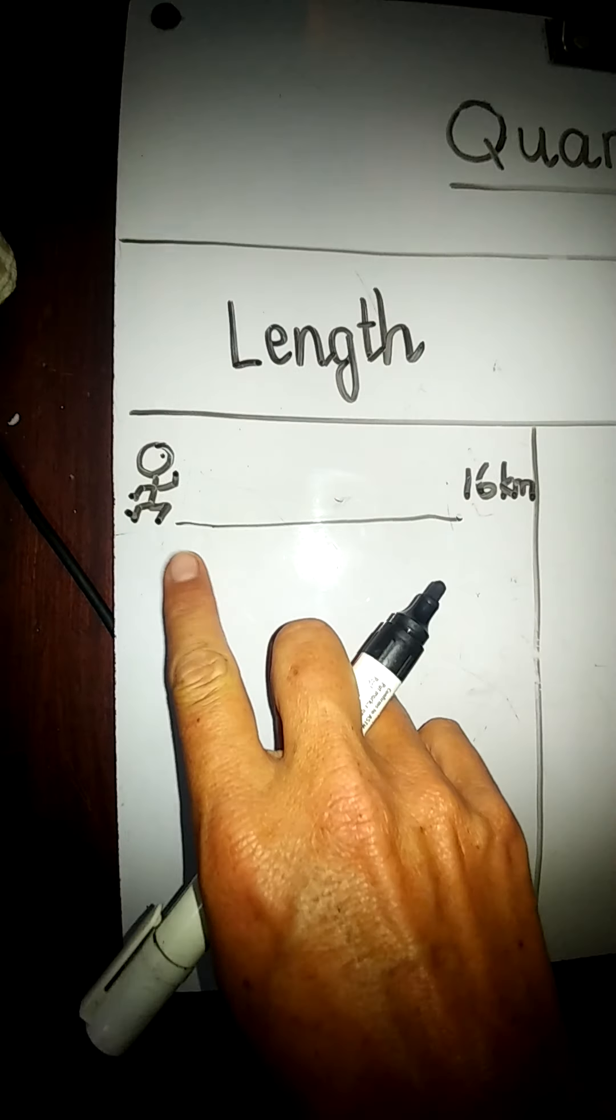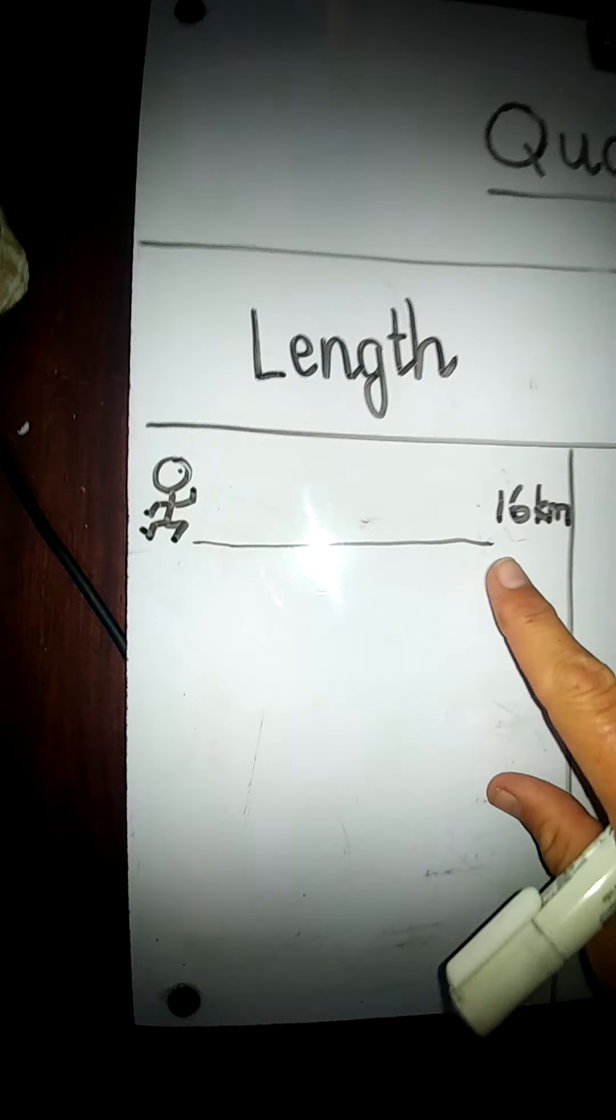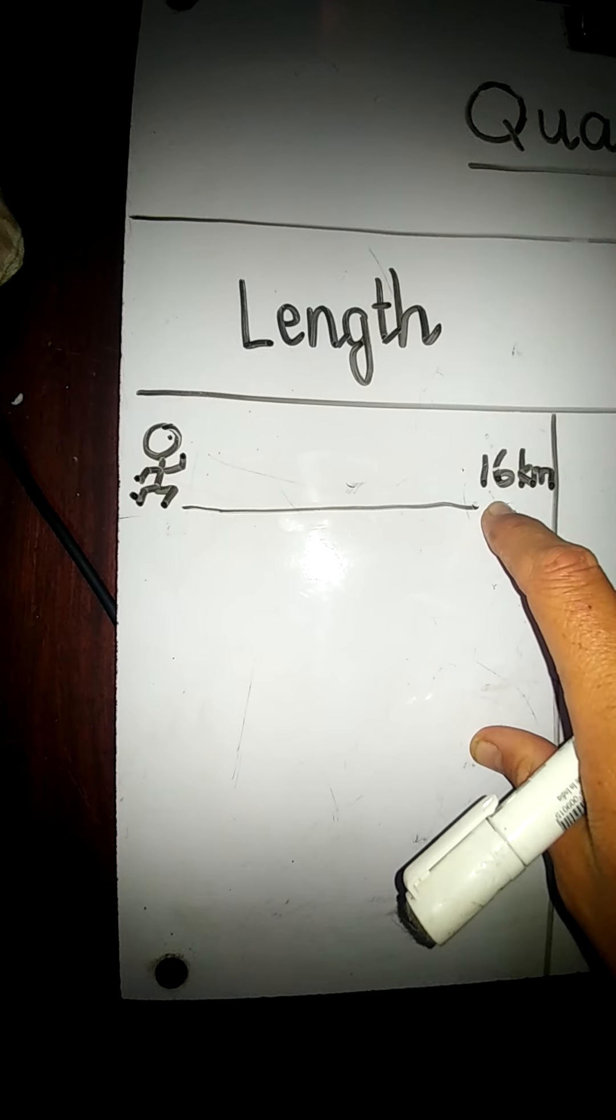Let's start with length. And this little man over here, we're going to call him Johnny. Hello, Johnny. Hi. So Johnny has to run, he's got to run 16 kilometers. That's a long way.